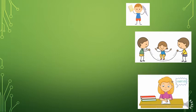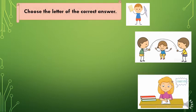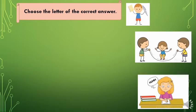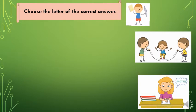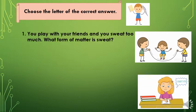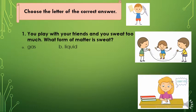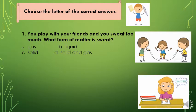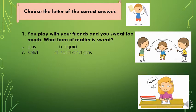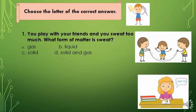Now let's have an activity. Get your paper and pencil and answer the following questions. Choose the letter of the correct answer. Number 1: You play with your friends and you sweat too much. What form of matter is sweat? A. Gas, B. Liquid, C. Solid, D. Solid and Gas.